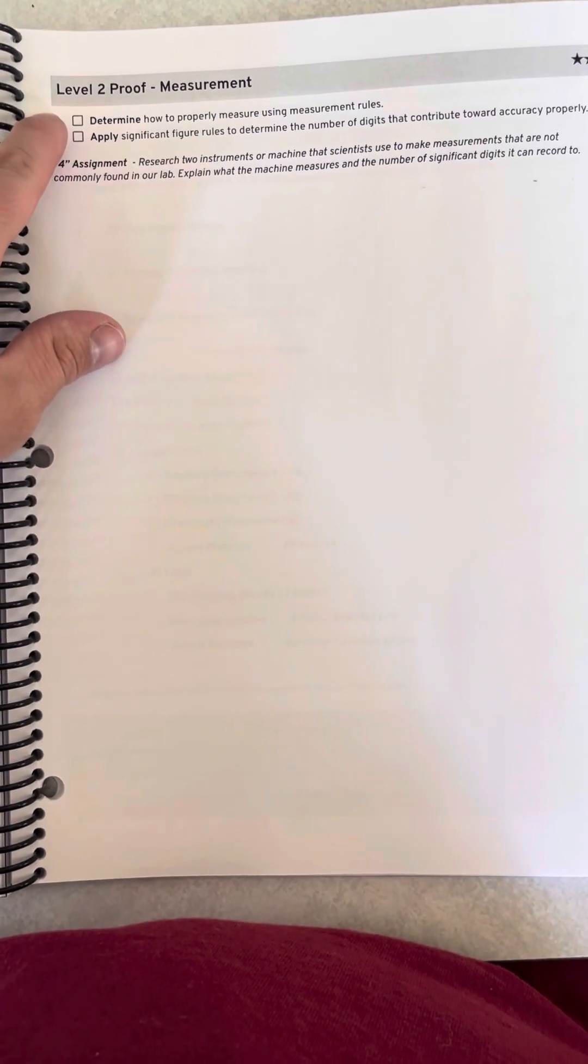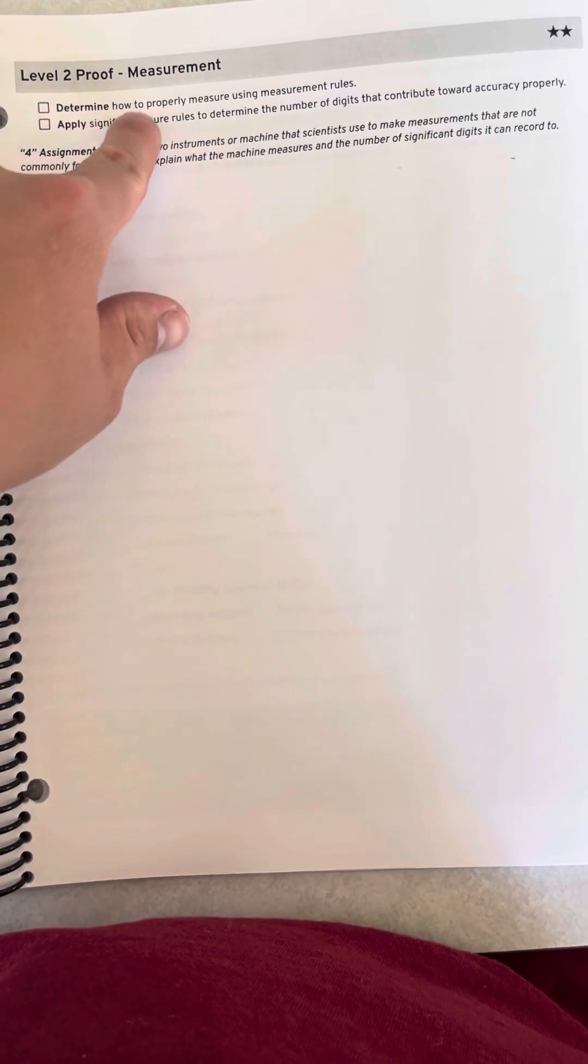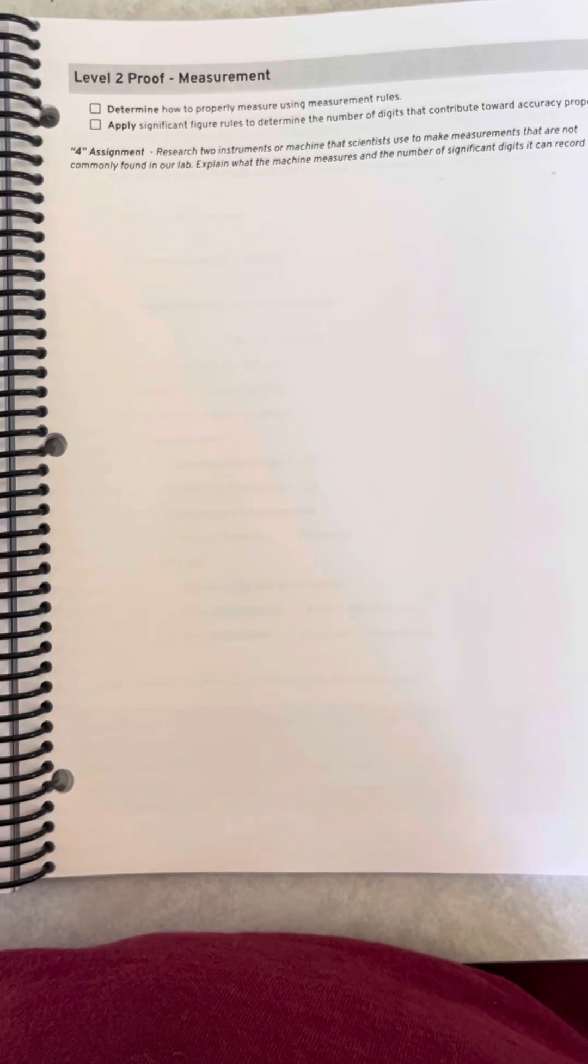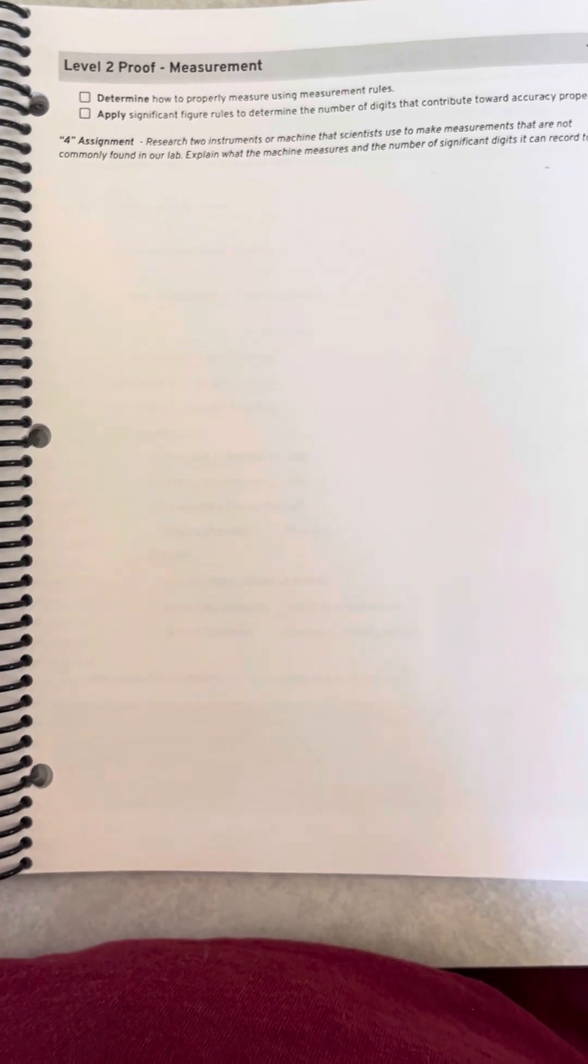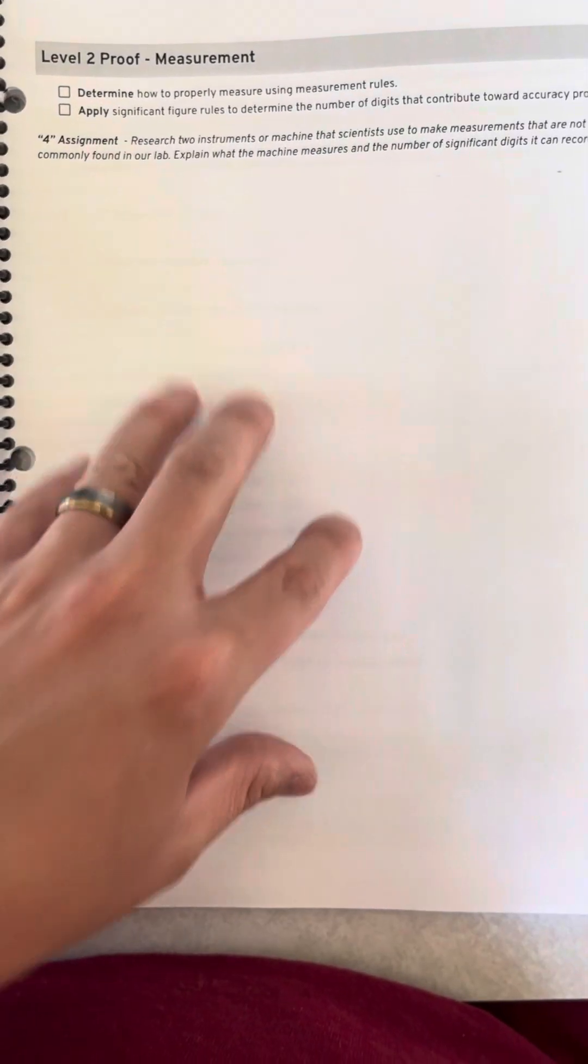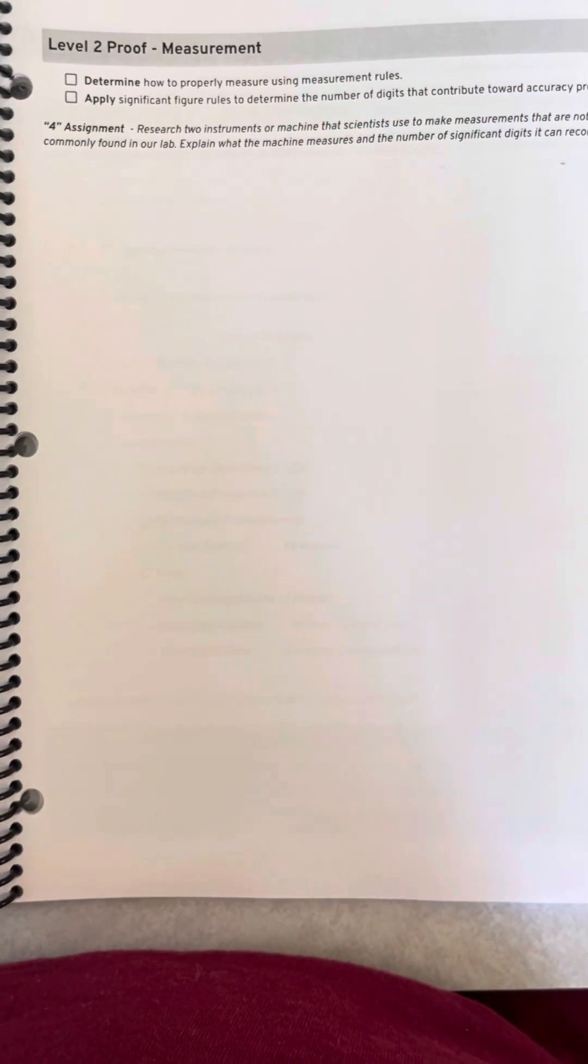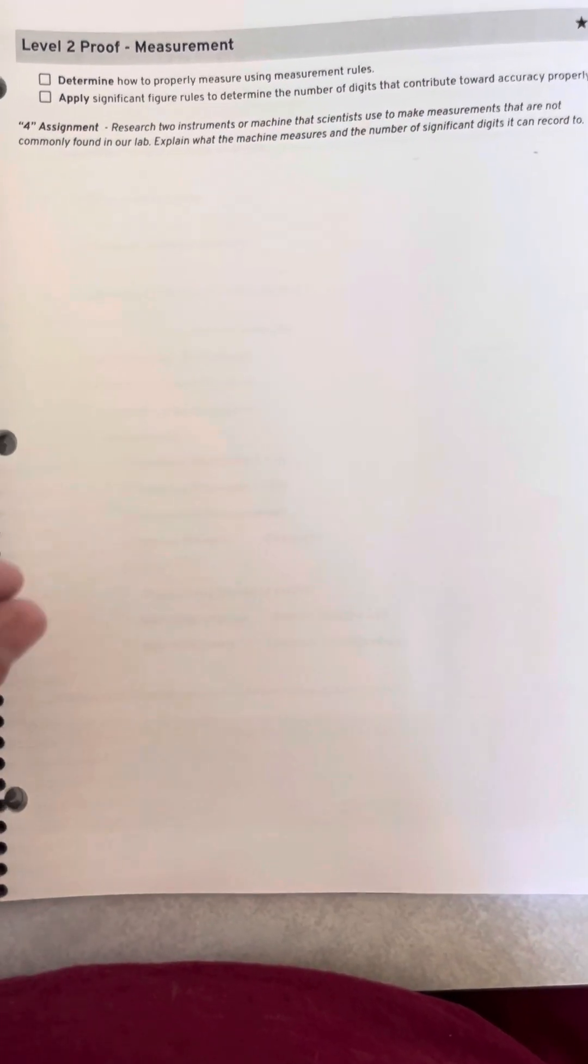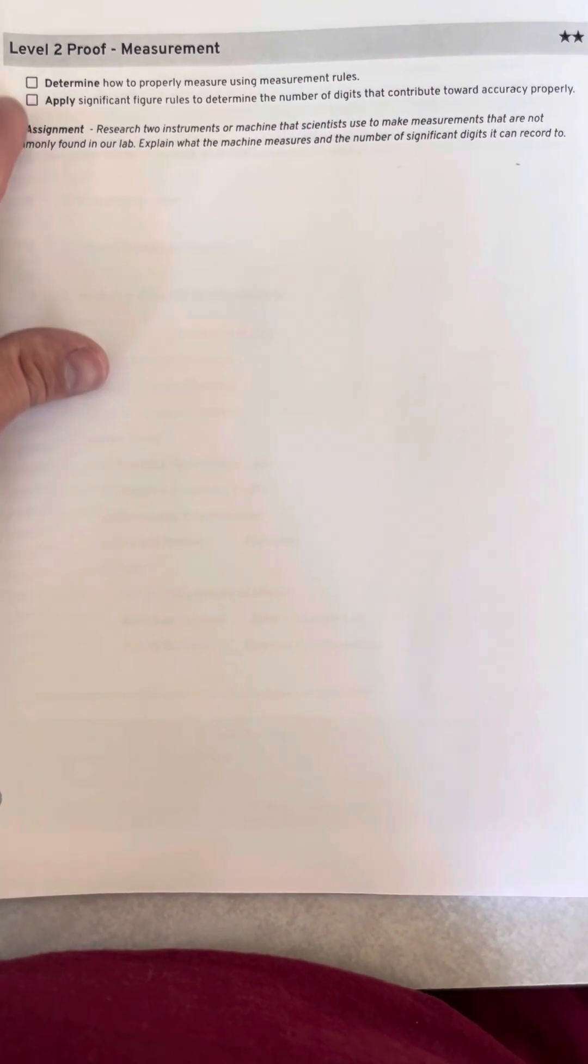Like for example, I can determine how to properly measure using measurement rules and they'll have to draw a picture of a ruler, a line, and they can show me that they understand measurement rules. So it's creative. They have to really think about it. And by the time they do this, they have already done a lab. They've already taken notes with me. We've already watched probably some kind of video. So they're going to come back and they're going to put their thoughts on paper and give me their best shot.